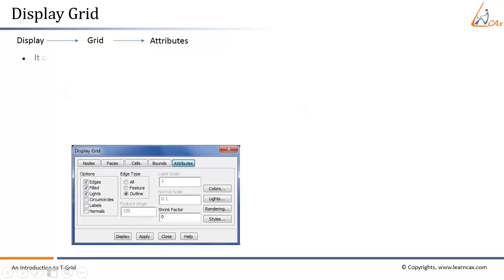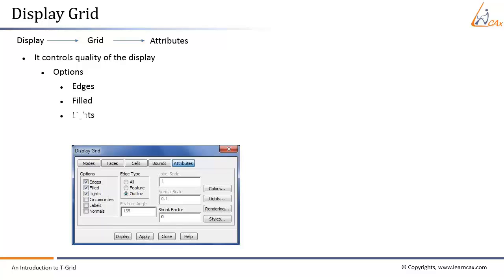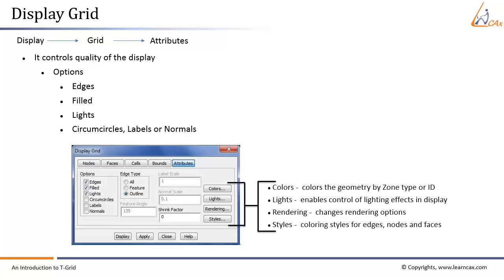Display quality can be controlled through attribute settings options: Edges — to display edges of an object; Filled — to display faces filled with colors; Lights — to display an object with lights turned on; Circles, Labels, or Normals — to display the object with circles, labels, or normals; Colors — colors the geometry by zone type or ID; Lights — enables control of lighting effects; Rendering — changes rendering options; Styles — changes coloring styles for edges, nodes, and faces.